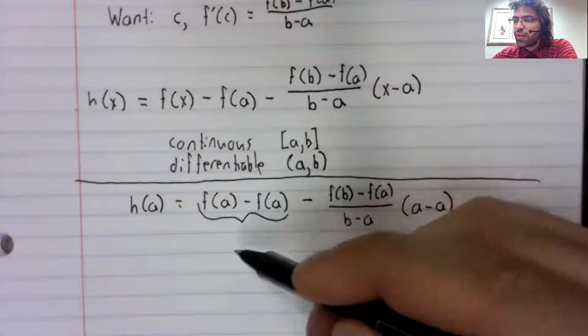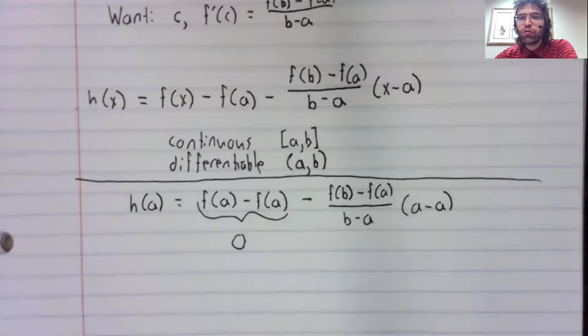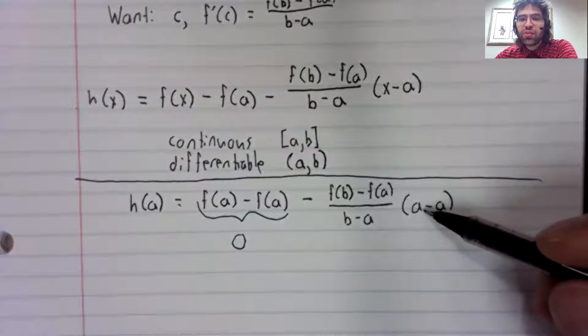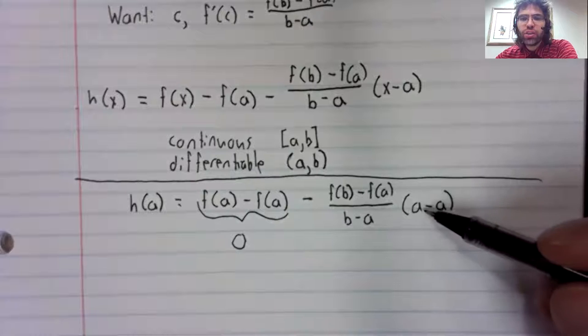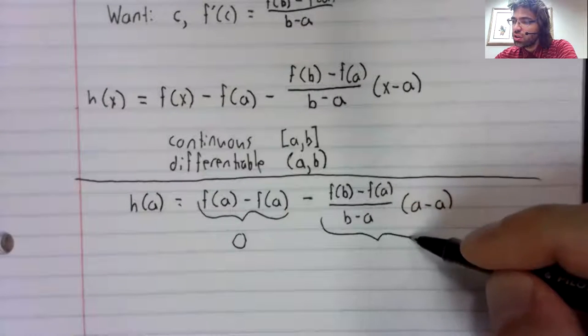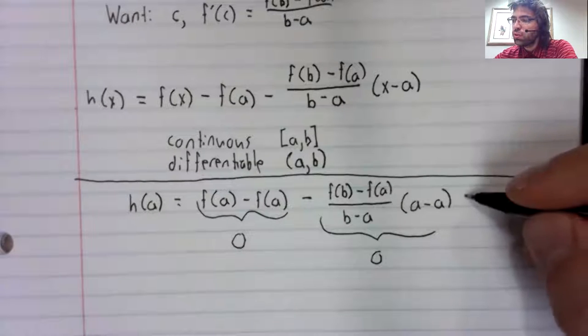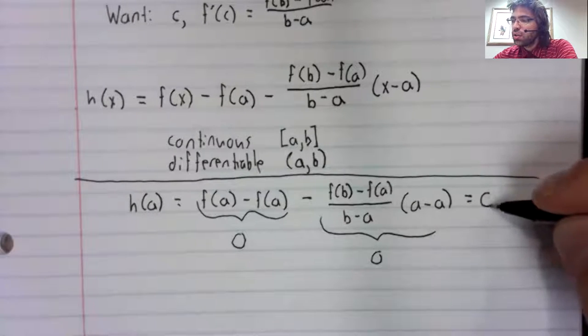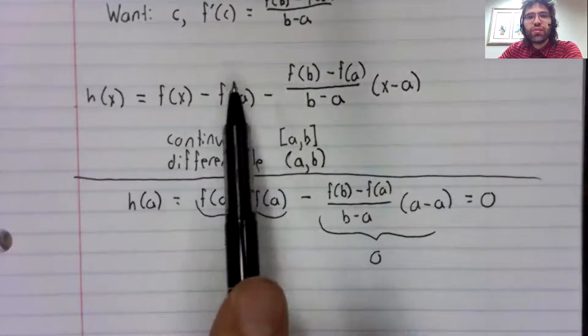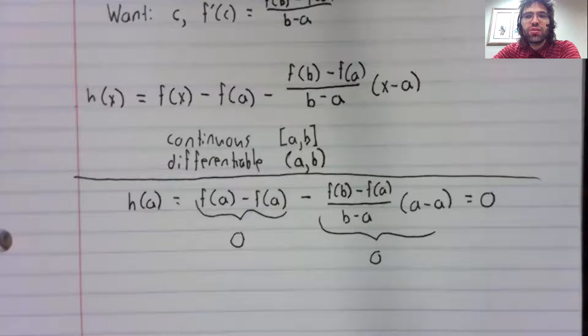This function is zero. a minus a is zero, and zero times a constant is zero. So at the left endpoint, this function is zero.